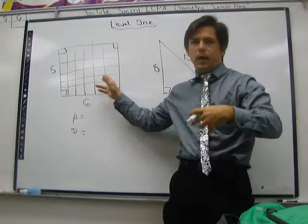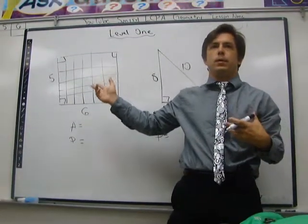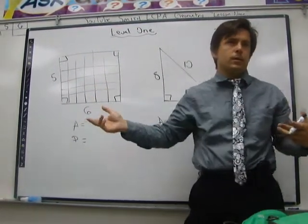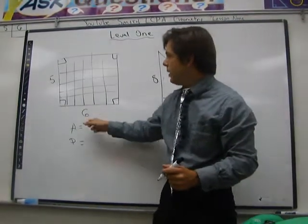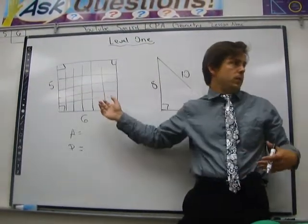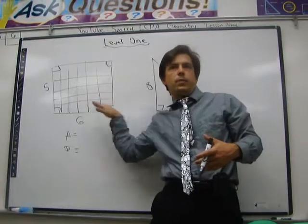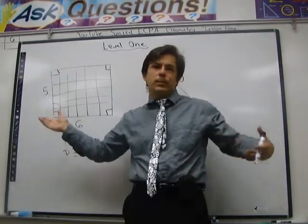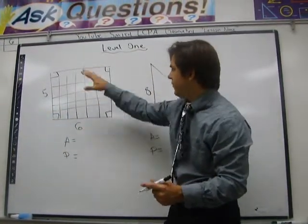So if you added up all the boxes here, how many do you think there would be? 30. You guys all know how to do that, right? So all area really means is how many boxes would there be. When there's six going this way and five going this way, you just multiply.